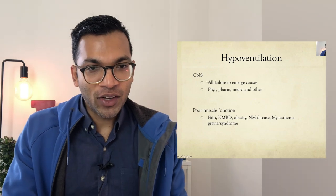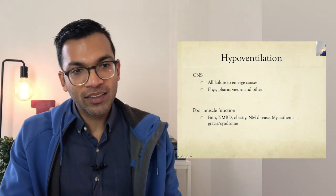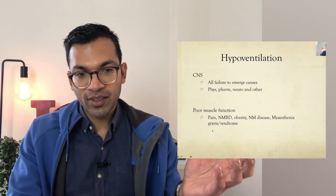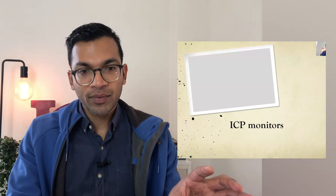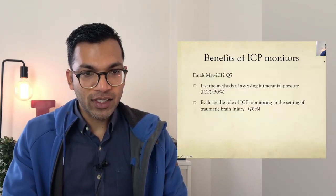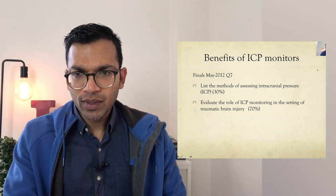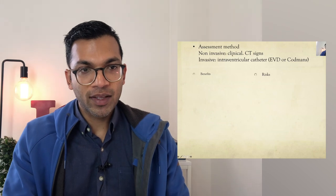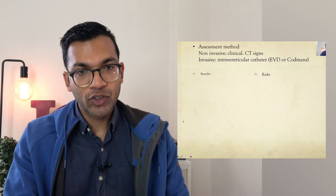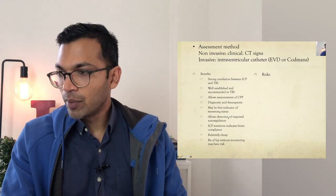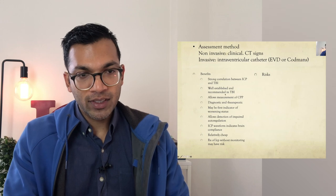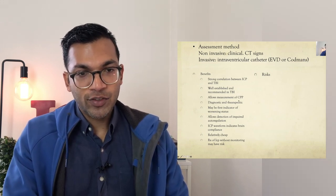So hyperventilation, CNS all failure, so all failure to emerge causes as we mentioned: bispharm, neuron, other, then poor muscle function causes a whole bunch of other things. But let's move on because we've already talked about that probably in length. So just a bit about ICP monitors and we're pretty much done so on time for 11:30. So there's a couple of questions: list the methods of assessing intracranial pressure and about the role of ICP monitoring in the setting of traumatic brain injury.